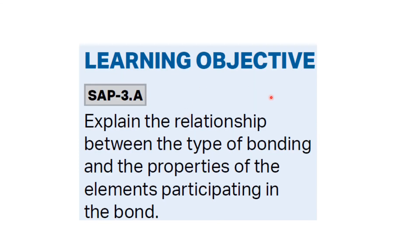The learning objective of the topic was to explain the relationship between the type of bonding and the properties of the elements participating in the bond. The properties we talked about for bonding are electronegativity and the metallic property. We studied the types of bonding — the covalent bond, the ionic bond, and the metallic bond — and saw how these types of bonding are related to the properties of the elements.